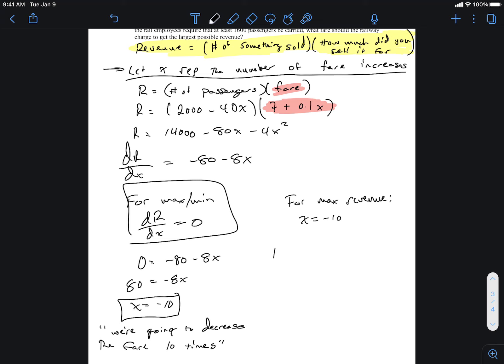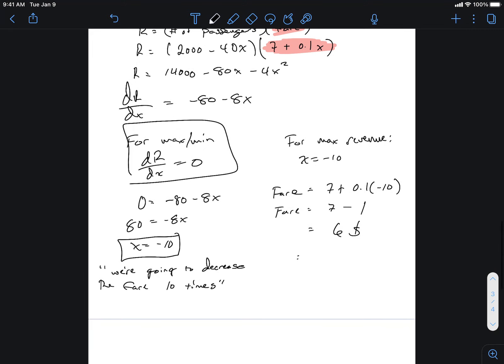Well, we defined what the fare was. So what we're going to do is for a max revenue, what's the fare that causes the maximum revenue? Well, we can find it. So for a max fare, fare is going to equal 7 plus 0.1 times negative 10. And so the fare is $6.